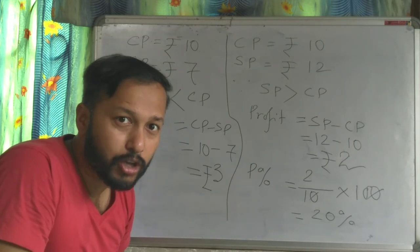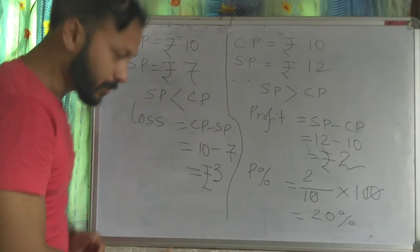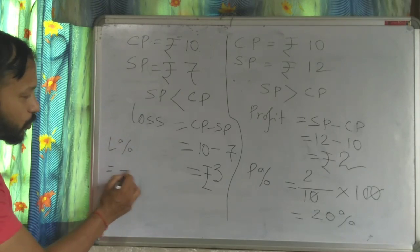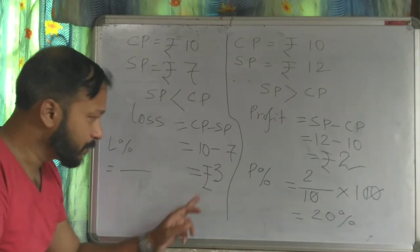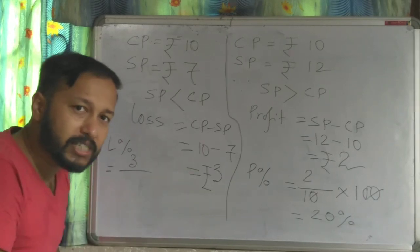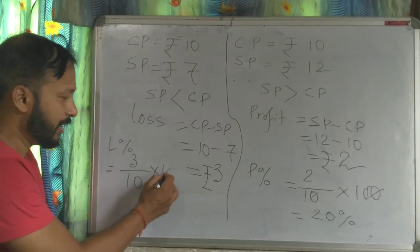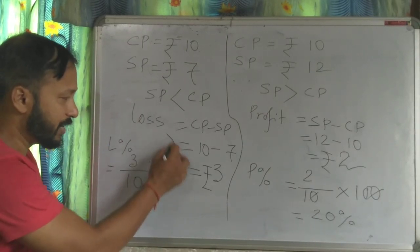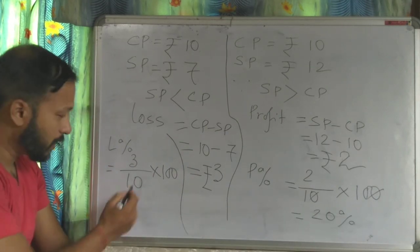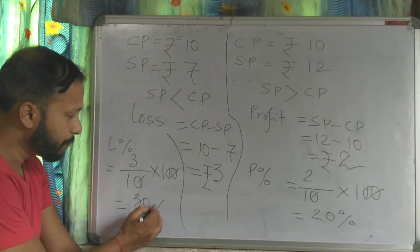Now, the same way, calculate the percentage of loss. Loss percent equals loss divided by CP into 100. The zeros cancel, giving 30% loss.